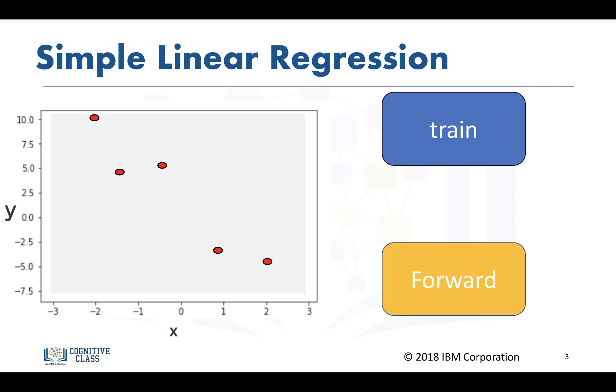We have a set of data points denoted in red, and we want to use these data points to obtain the equation of the line. This step is usually called the training step. We use the data points and train the model.